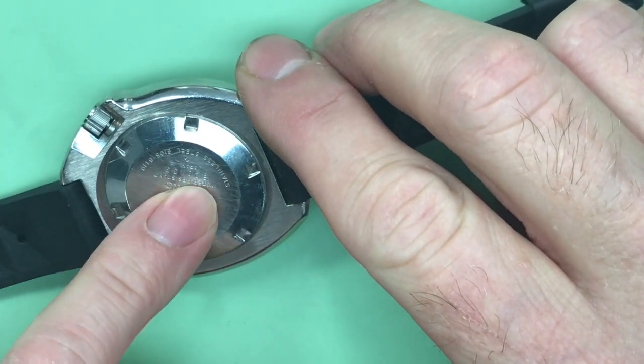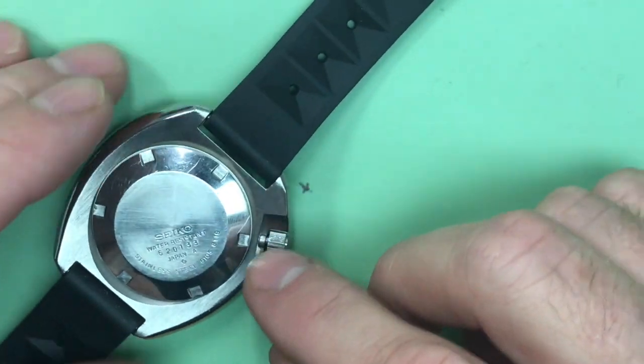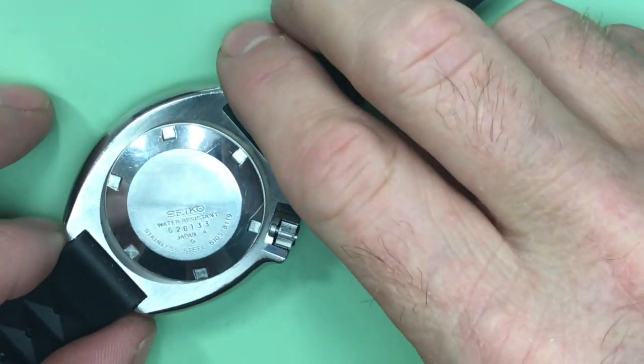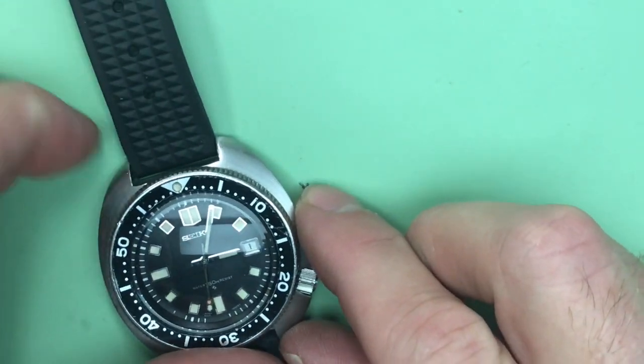I can show you my 6309 and it's definitely got the same kind of issues going on with the chapter ring with loss of index. But that's okay. Cosmetically it's still beautiful, it's a great watch. Got perfect case lines. Nice. There's a later version, this is a 76, so one of the later of this variant.